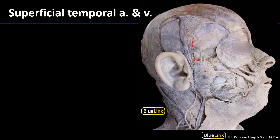The superficial temporal vein drains this region and empties into the retromandibular vein. Typically nestled between these two vessels in this region is the auriculotemporal nerve. The auriculotemporal nerve is a branch of V3, the mandibular division of the trigeminal nerve, and it provides sensory innervation for this region of the lateral head.